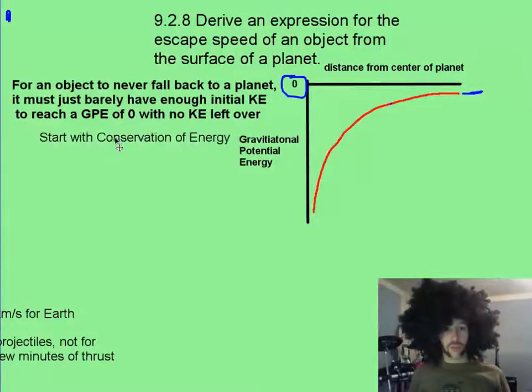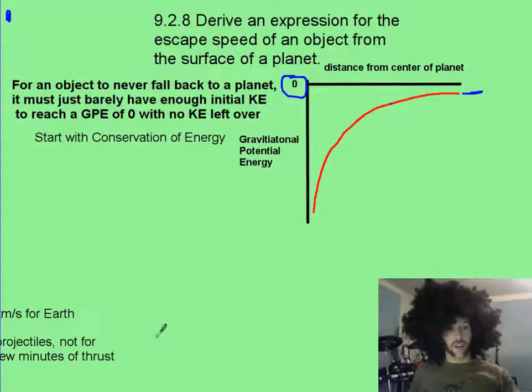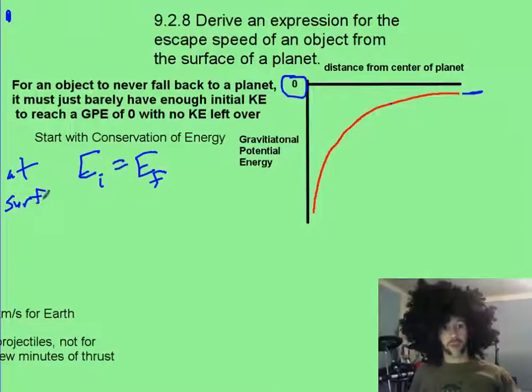Now we can do this without too much problem if we start with the conservation of energy. And you should know that that always starts with initial equals final, where this initial is going to be at the surface of your planet, where you are launching your space probe from.